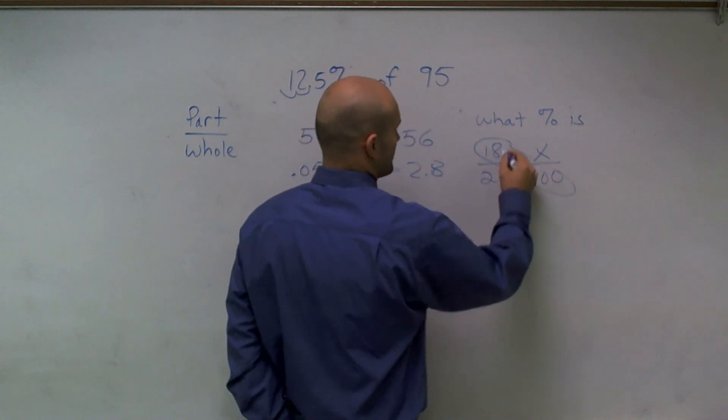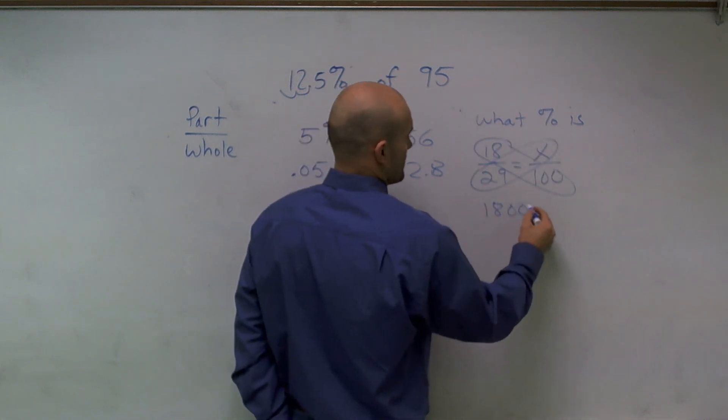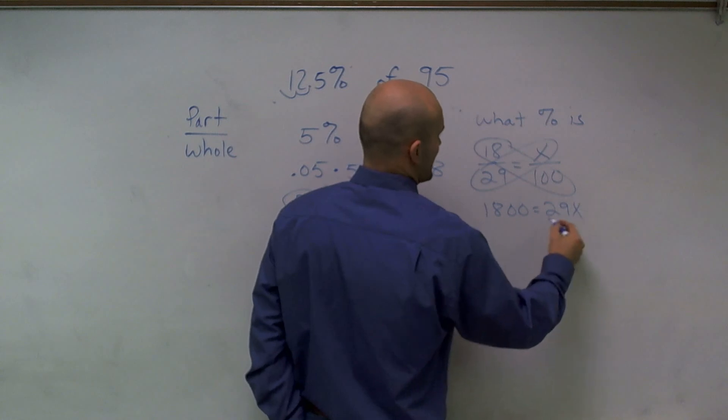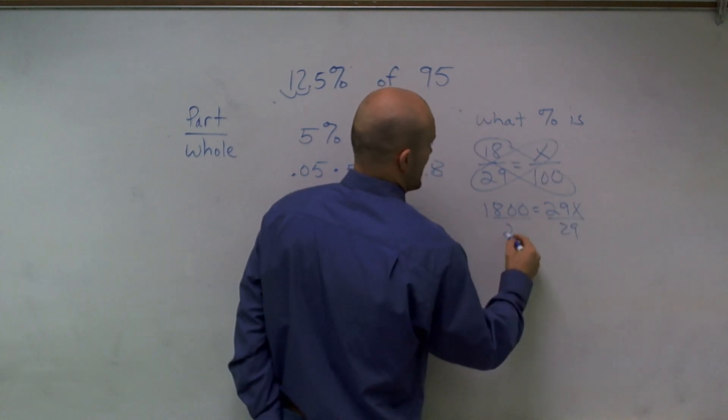So again, I can cross multiply. So I'd have 18 equals 29x, divide by 29,